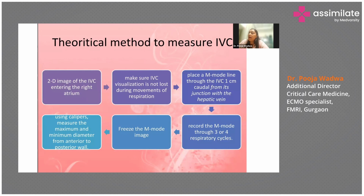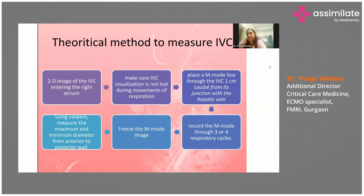The M-mode measurement should be taken ideally one centimeter from its junction with the hepatic vein. Your right atrium, IVC, and hepatic vein should all be present and appreciable in one view. When you are confident you can see them, place it in M-mode, record through three to four respiratory cycles, freeze that image, and use the calipers to measure the maximum and the minimum diameters.